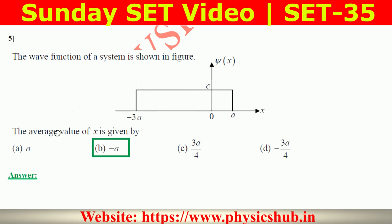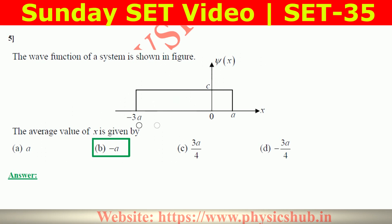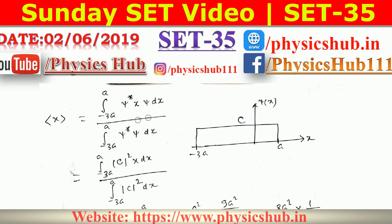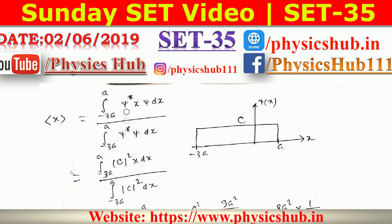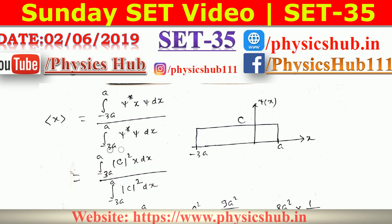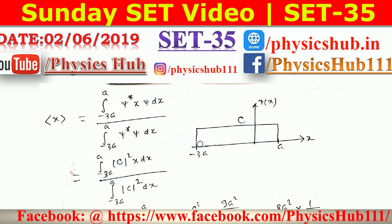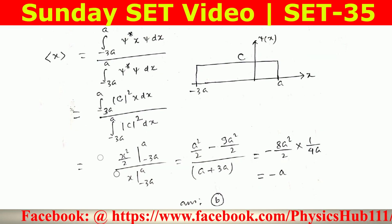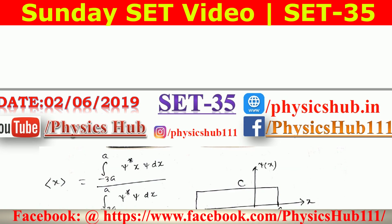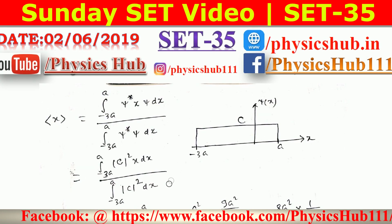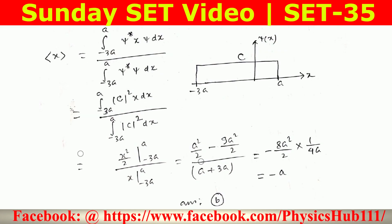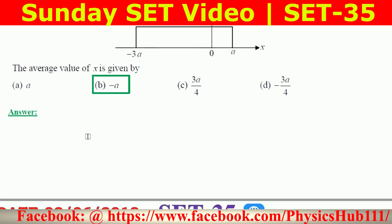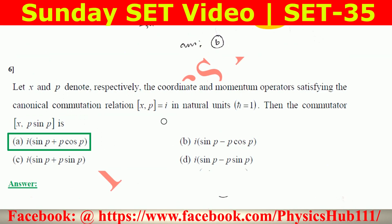Question 5: The wave function of the system has value C from −3a to +a. Find the average value of x. Using ⟨x⟩ = ∫ ψ* x ψ dx / ∫ ψ* ψ dx over the interval −3a to +a, with |ψ|² = |C|², the integrals simplify to a standard calculation. The result is ⟨x⟩ = −a, matching option B, so option B is correct.